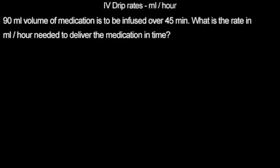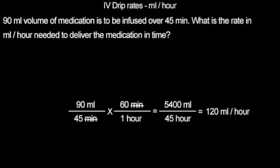Pause the video, try this problem on your own, and continue when you are ready for the answer. 90 milliliters of volume, infused over 45 minutes, requires a drip rate of 120 milliliters per hour.